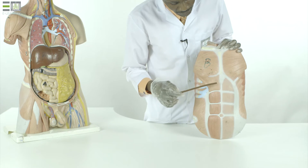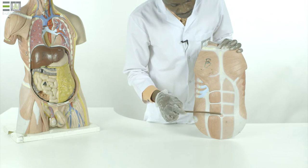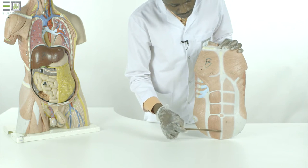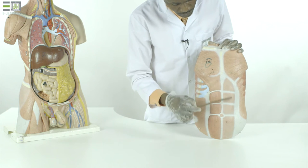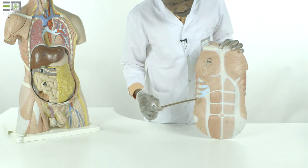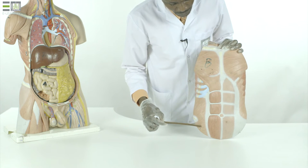In the midline: epigastric region, umbilical region, and hypogastric region. And laterally, on both sides of the midline: hypochondriac, lumbar, and iliac regions.